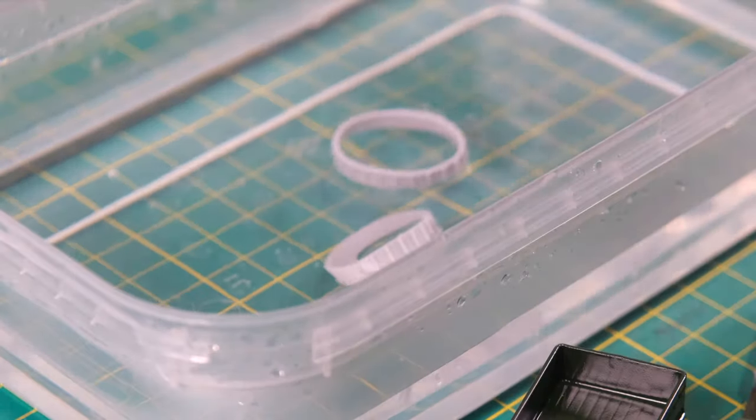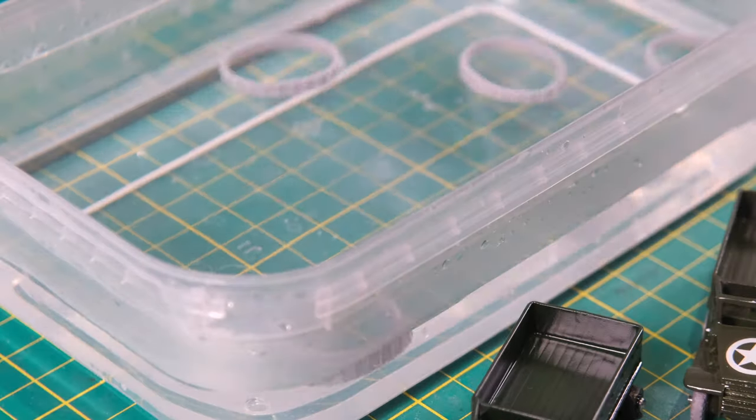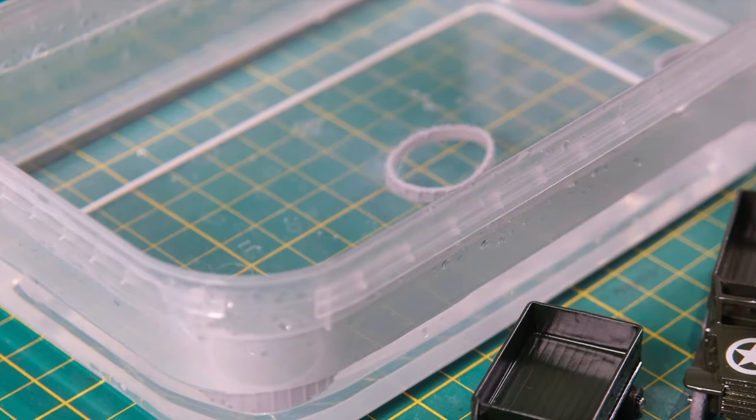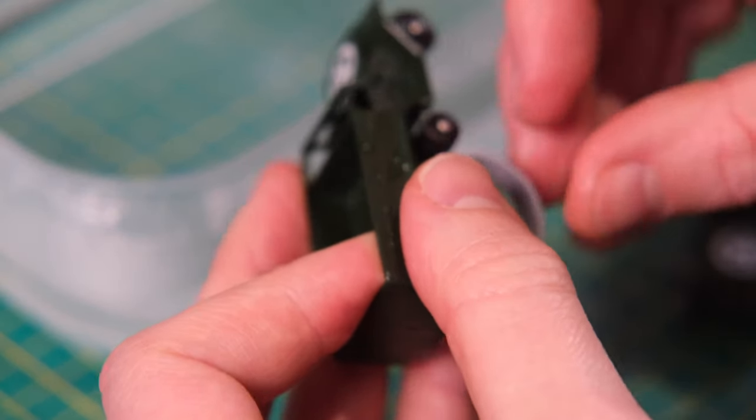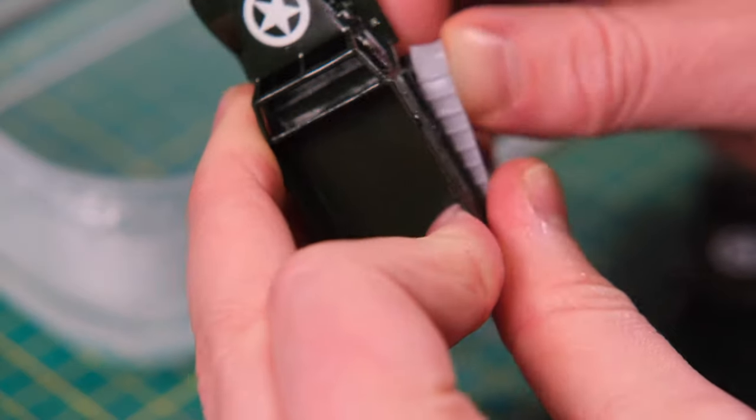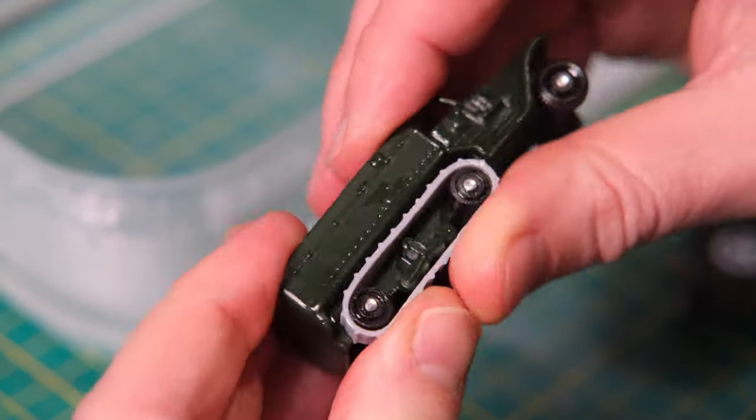I picked up some reproduction grey tracks from Steve Flowers Model Supplies. I will leave a link in the video description. I put these into some hot water for a few minutes to make them more malleable allowing them to stretch over the rollers. And there we have it a new set of tracks for the half track.